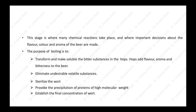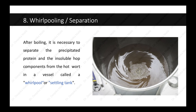The next step is whirlpooling or separation. After boiling, it is necessary to separate the precipitated protein and insoluble hop components from the hot wort in a vessel called a whirlpool or settling tank, as seen in the diagram.